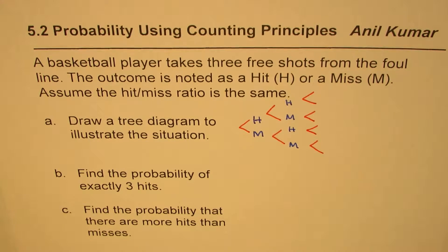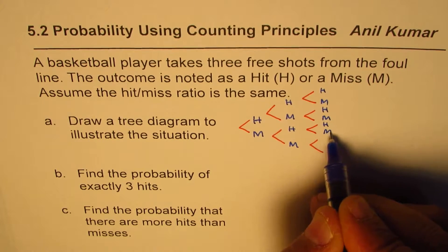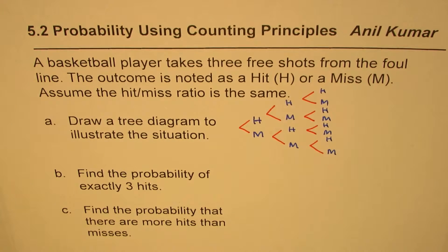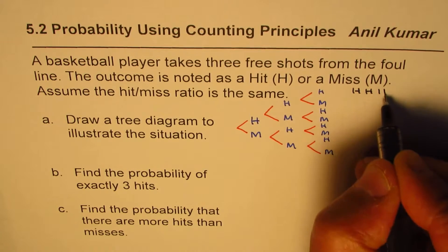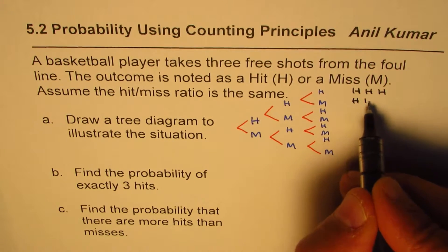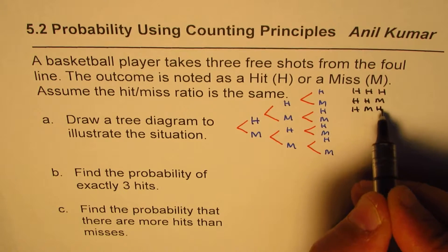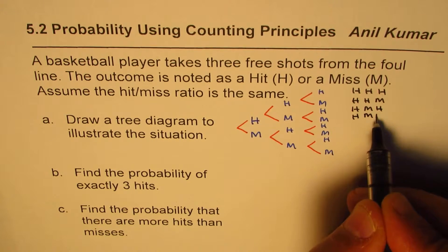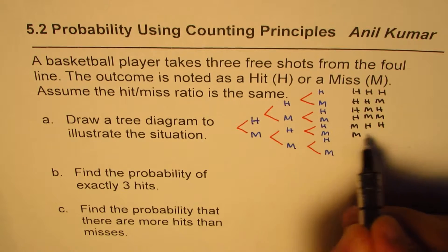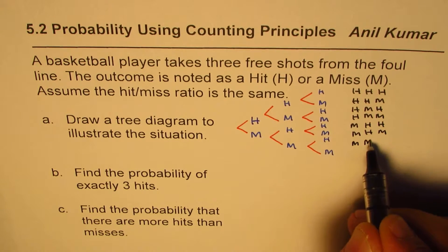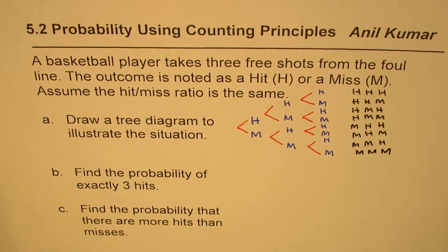Similarly in the third trial we could get the same kind of combination, and in all we'll have eight combinations. So let me write down all these eight combinations: three hits (HHH), two hits and a miss (HHM), hit-miss-hit (HMH), hit-miss-miss (HMM), then starting with a miss: miss-hit-hit (MHH), miss-hit-miss (MHM), miss-miss-hit (MMH), and miss-miss-miss (MMM).